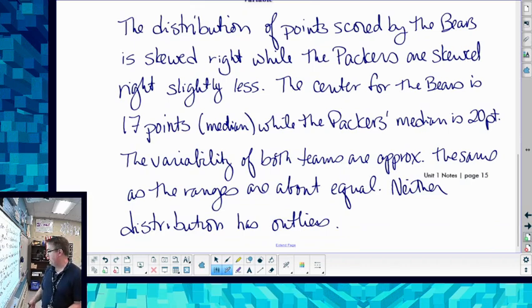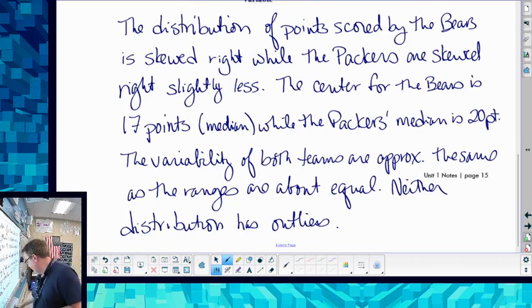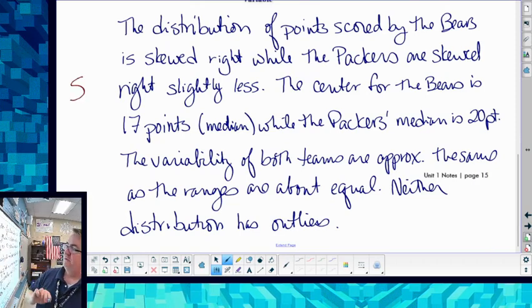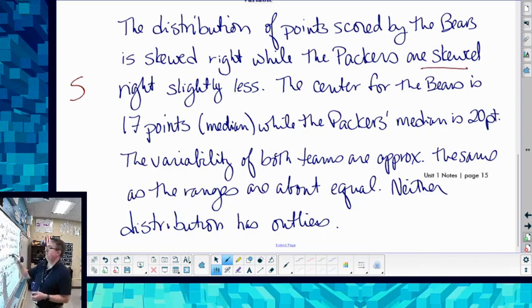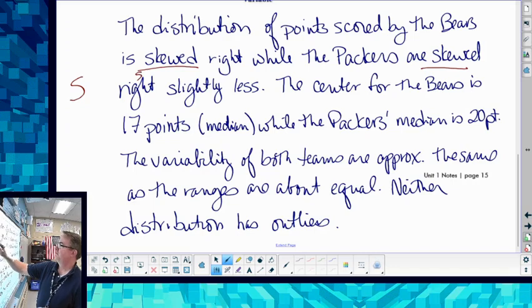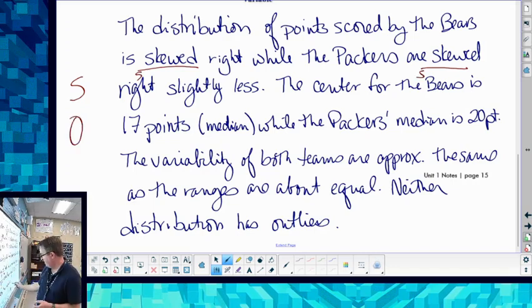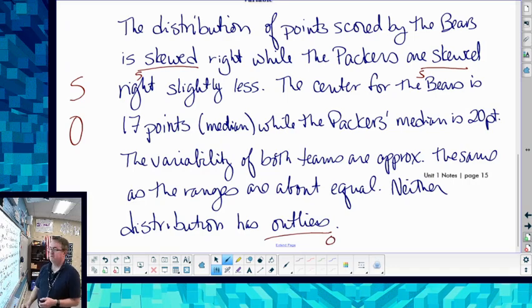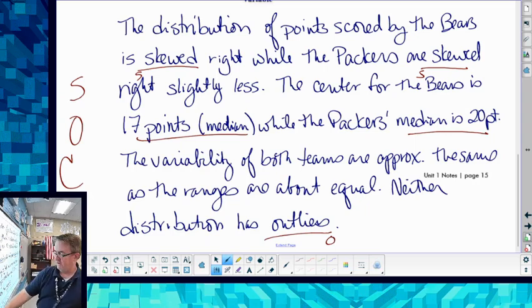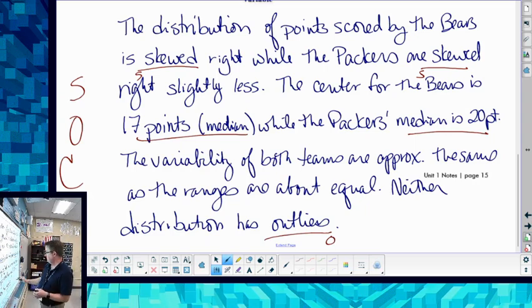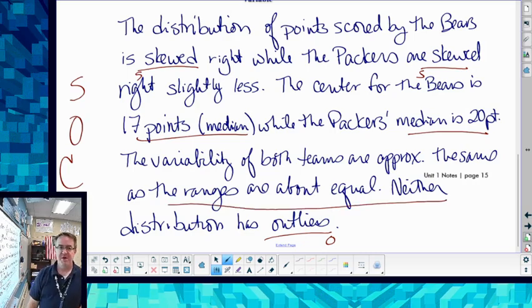And neither distribution has outliers. So notice we talked about the shape, that's here: skewed and skewed. We talked about outliers, that's down here because we really didn't have any. Centers we talked about here, and then we also talked about variability, which is here: the ranges are about equal. So hopefully that helps.